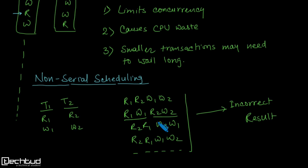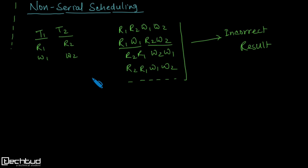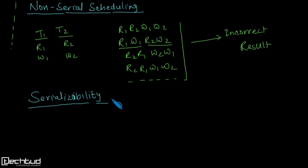It means that when we go for interleaved or parallel execution of transactions, we can also get an incorrect database state or inconsistent database state. So we need to be careful. That is where serializability comes into the picture — serializability helps us to check whether the output of a certain schedule is correct or not. So serializability stands for checking the correctness of a schedule.